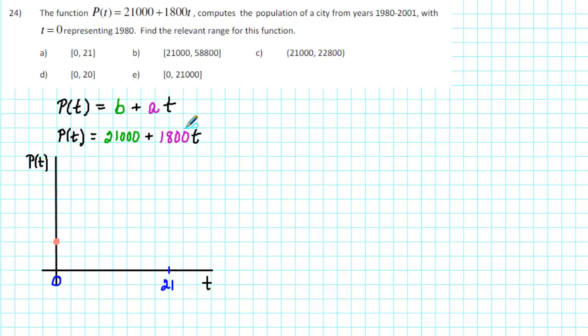The 1,800 tells us that the population is increasing by 1,800 people per year. So after 21 years, the population will have to have increased. So we'll put a point that is above our initial point. Finally, we know that our function is linear so we can go ahead and connect these two points with a straight line.